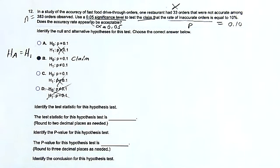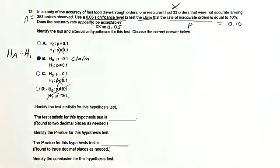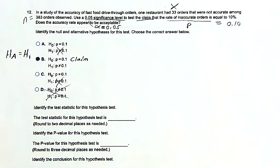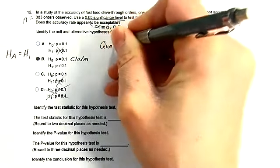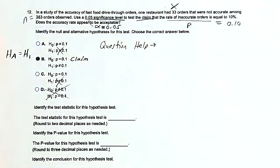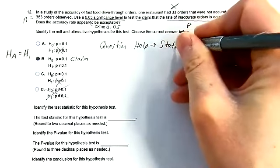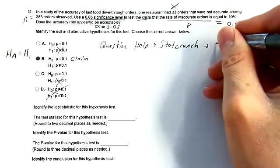To get the test statistic and p-value, I'll show how to do this using StatCrunch, the tool embedded with the homework software. Click 'Question Help' at the top right of the screen, then click StatCrunch to load it up. It's web-based software, so if you have internet access you can all do this. Then go to Stat and select Proportion Stats.